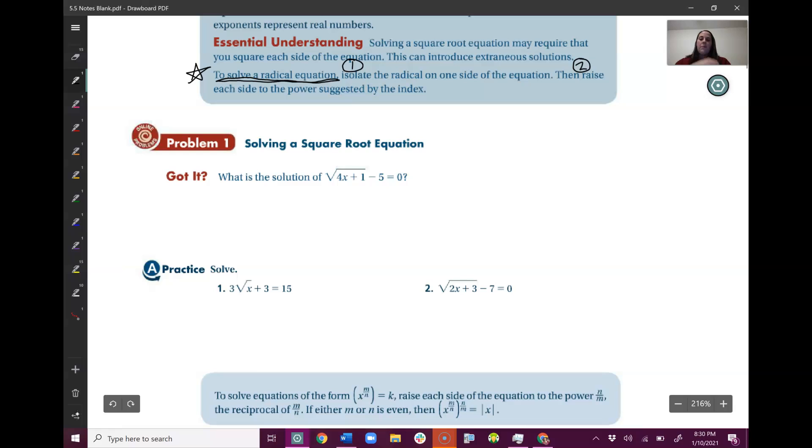So let's look at our first example. Right here. Step one, get the root by itself. So I'm going to add five, get rid of this five right here, so I can get this square root all by itself.